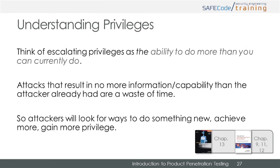Another goal of an attacker is to gain more privilege — think of privilege as the ability to do more than you can currently do. Attackers want to gain more privilege so they have more capabilities useful to their security agenda or to enable them to achieve additional attacker goals. A typical example of privilege escalation might be when an attacker uses a non-privileged process to exploit a vulnerability within a privileged process, such as buffer overflows where a non-root process spawns a root shell by exploiting a privileged vulnerable application.